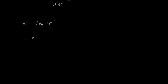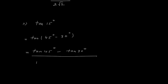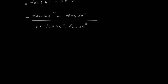Now the next question: find the value of tan 15 degree. For 15 degree, it is tan(45 degree minus 30 degree). So this is tan(A minus B), and tan(A minus B) is tan A minus tan B upon 1 plus tan A into tan B. Here tan 45 is 1 minus tan 30, which is 1 upon root 3, all divided by 1 plus tan 45 times tan 30, which is 1 upon root 3.